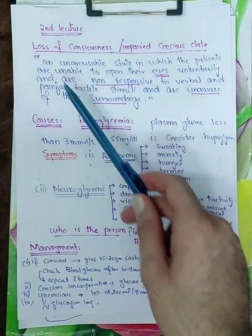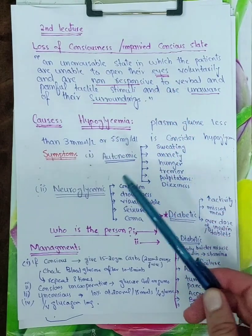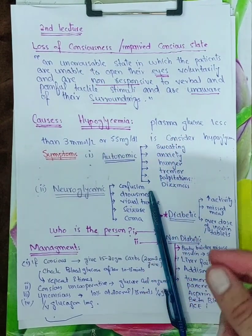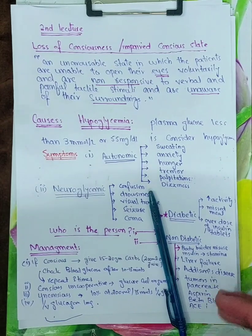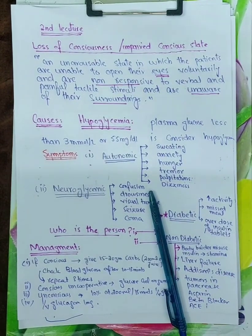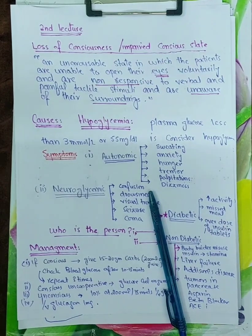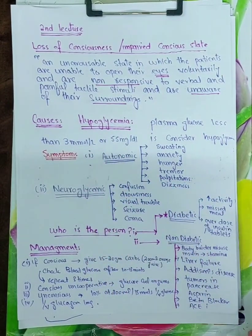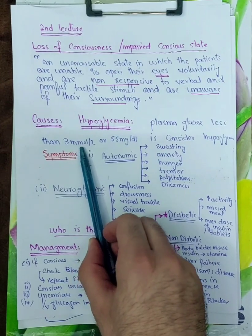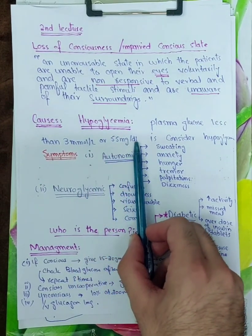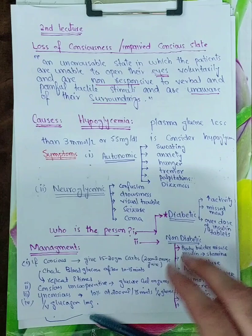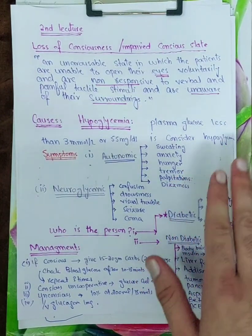So if the patient comes in the state of impaired consciousness and you are considering him as a hypoglycemic patient, you will do a simple test - blood glucose level after examining him. But please watch my first lecture so you should know how to approach the loss of conscious patient in the impaired conscious state. So the hypoglycemic patient comes to you and you did the test like blood glucose level.